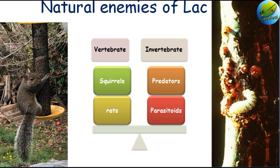One of the major problems in lac cultivation is the pest that feeds on the lac insects. We can divide those natural enemies or pests into two categories: vertebrate pests and invertebrate pests. The average annual loss caused by these pests ranges between 35 to 45 percent in India.